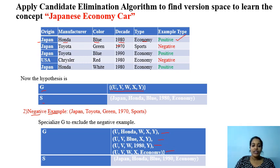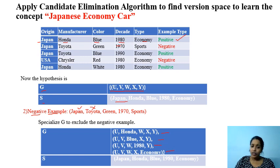Now we check with S. Using S, we are checking our new instance — instance number 2. Japan and Japan is getting accepted. Honda and Toyota is getting rejected. So our specialized hypothesis rejects our negative instance. So there is no change required for S.